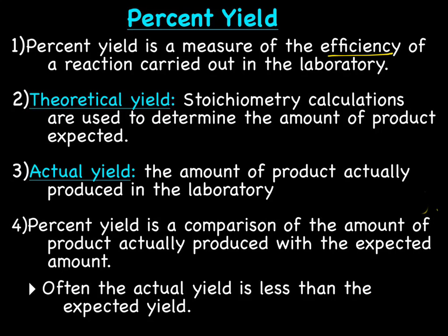So theoretical yield. Stoichiometry calculations are used to determine the amount of product expected. So this would be in a perfect world. So you do stoichiometry calculations and figure out how much product you should make if everything goes perfectly.